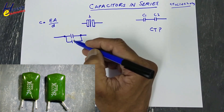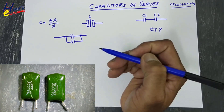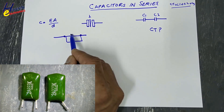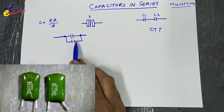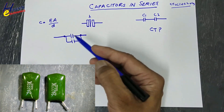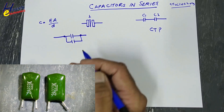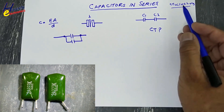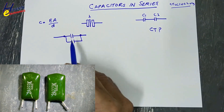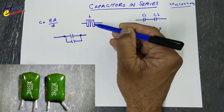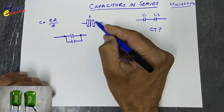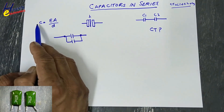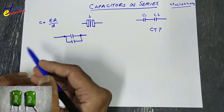When we connect capacitors in parallel, we use the same voltage rating, so the dielectric remains the same. If capacitor values are the same, the total capacitance will be doubled. If values are different, they are added as C1 plus C2 plus C3, because we are effectively increasing the plate size, which automatically increases capacitance.